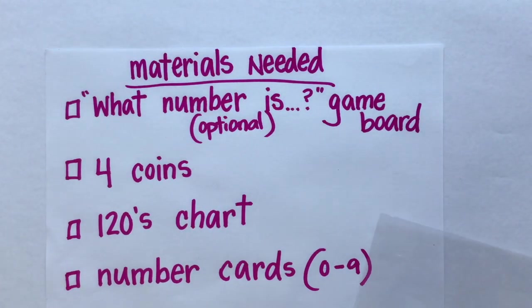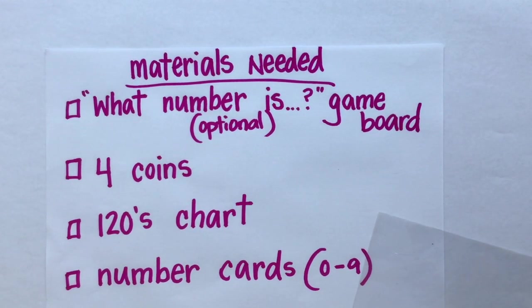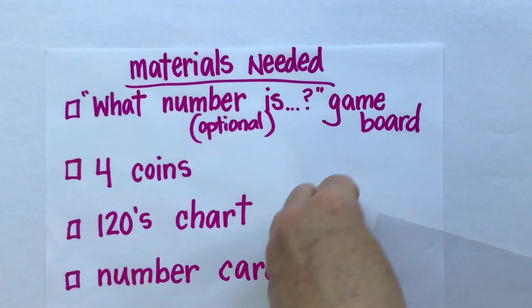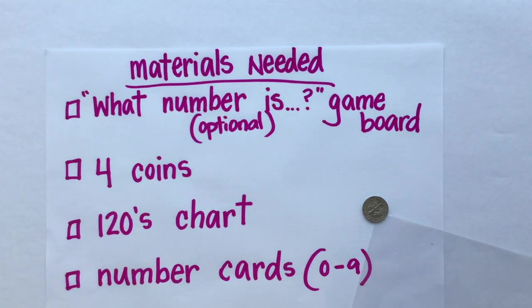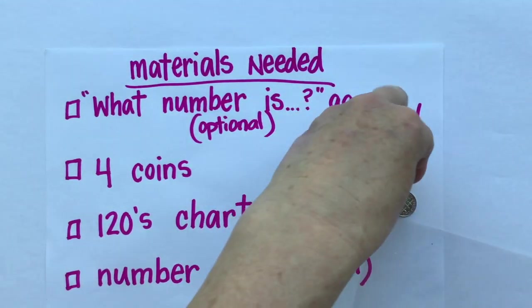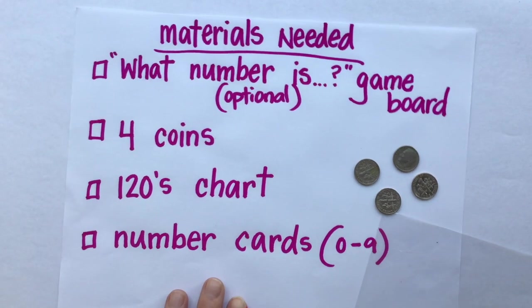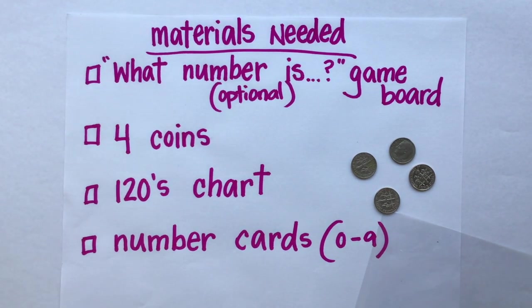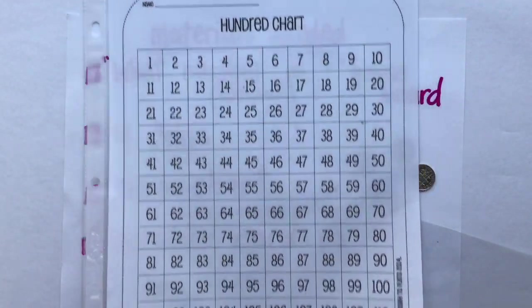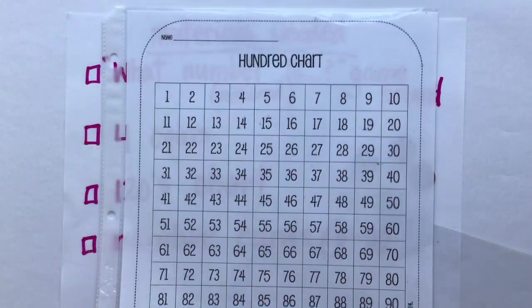The next thing you're going to need are four coins. We're going to use these on our hundreds chart to move around. You're going to need the hundreds chart, same one that we sent last week. I've attached it again to today's lesson.